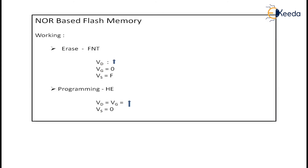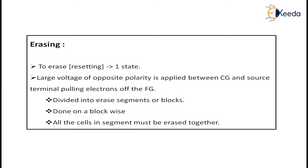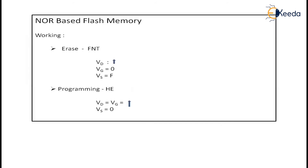So far we saw about flash memory operation. For erasing, I am pulling the electrons off the floating gate using the FNT tunneling process. FNT stands for Fowler-Nordheim Tunneling. While performing the erase operation, I pull the electrons away from the floating gate. I can add electrons onto the gate or remove electrons from the floating gate — which are the processes of writing and erasing respectively, as explained in the previous video. I am not going into the depth of FNT here, as I gave a clear explanation in the NAND-based flash memory video.